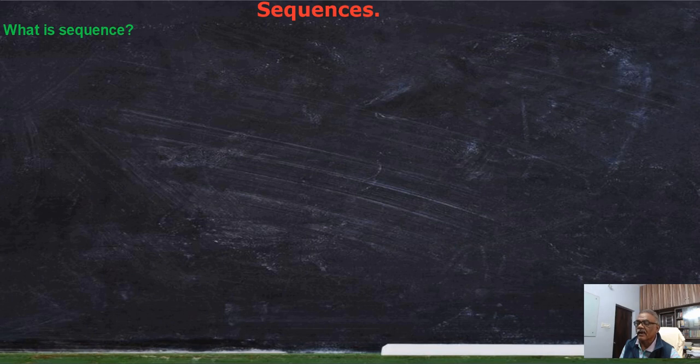What is a sequence? A sequence is a list of objects or events arranged in an array such that each object is obtained from the preceding object by a certain rule. More formally, it is just a function f from N to A, where N is the set of natural numbers.